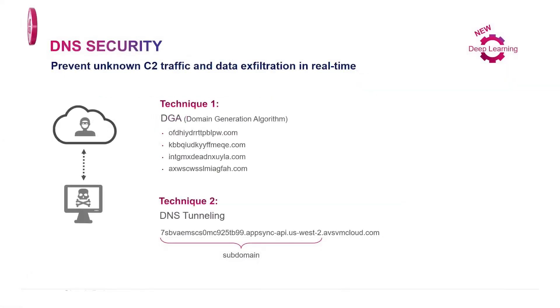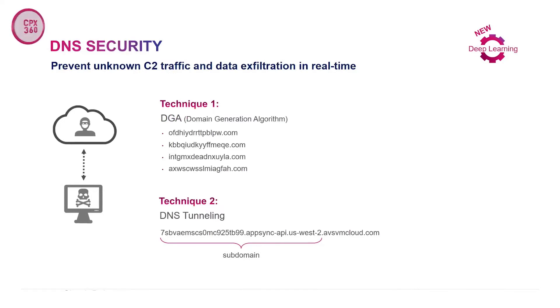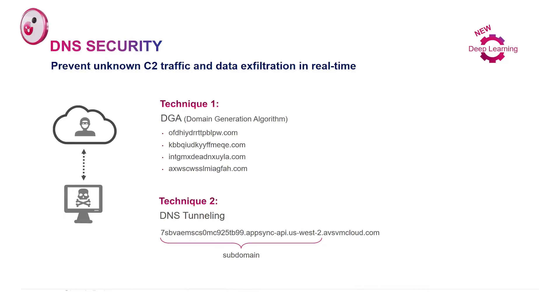The second technique is DNS tunneling. Basically, when the attacker needs to communicate back with the C2 server, they encrypt the data in the subdomain, as shown in the example — which I actually took from the SolarWinds attack.